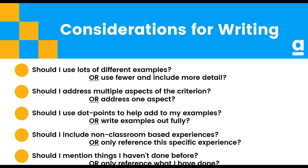So the first one is: should I use lots of different examples or should I use fewer and include more detail? Should I address multiple aspects of the criterion or just address one aspect? Should I use dot points to help add to my examples or should I write examples fully? Should I include non-classroom experience or just reference specific experience? Should I mention things I haven't done or only reference what I have done? With all those thoughts going through our heads, that can feel a little bit confusing.